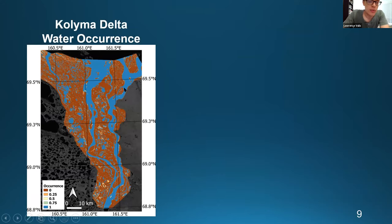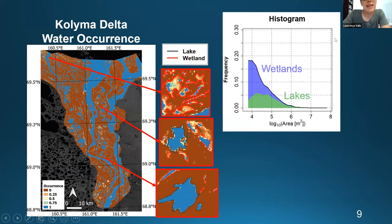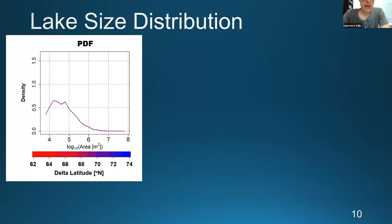Coming back to the Kalima, we have the occurrence map generated, with blue showing 100% water occurrence and brown showing zero percent. We decompose the histogram into fractions of lakes versus wetlands as a function of area, and observe that smaller water bodies are mostly wetlands. To study the size distribution we go directly to the PDFs — probability density functions — with area under each curve normalized to one. I'll focus on the lakes today.